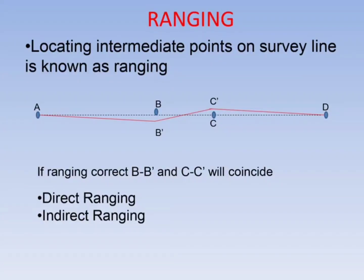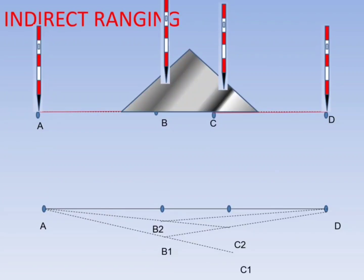Locating intermediate points on a survey line is known as ranging. If ranging is not proper, the measured distance will be more than the actual distance. If all points are visible from A to D, direct ranging can be done by placing a ranging rod between stations at tape length. Indirect ranging is done when A and D are not visible from one place — intermediate approximate points at B and C are placed so that A-B-C or B-C-D are visible from one end, then points are adjusted from the other end.